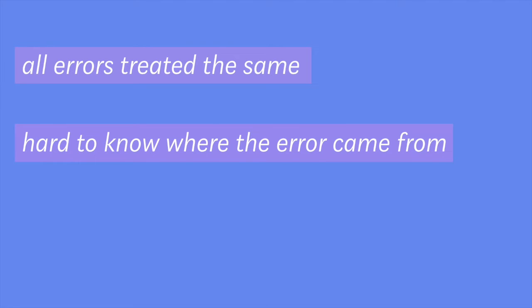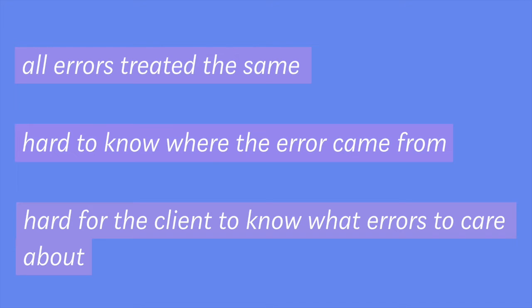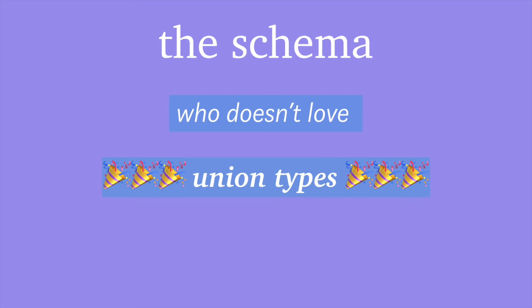So let's refresh on what we're looking to fix here. Our errors array has all these errors in it, and it's like all errors are treated the same — they're all the same severity. Also it's kind of hard to know where exactly this error came from — is it from this user or this post? And it's also hard for the client to know what errors to care about. So let's get into what we might do to fix this and make it better. Let's look at the schema, because who doesn't love union types?